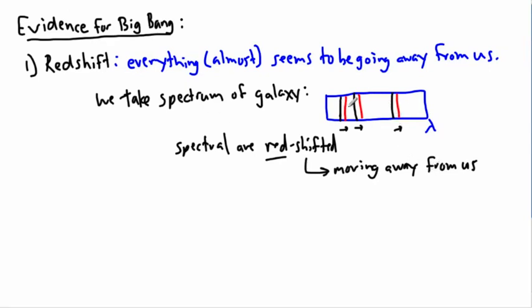What this means is that almost everywhere you look, almost anything you look at, if you're looking at sufficiently far away objects like galaxies, if you look at the spectrum of these things, we find those lines but they're all shifted a little bit over to the right. In fact, some of them are shifted even more than expected. The spectral lines are red shifted.